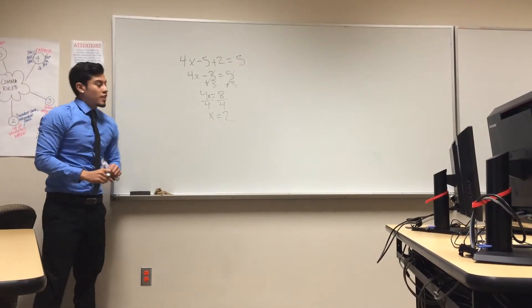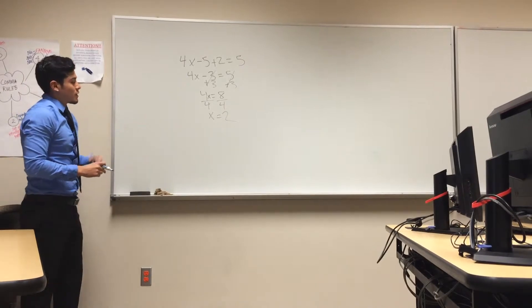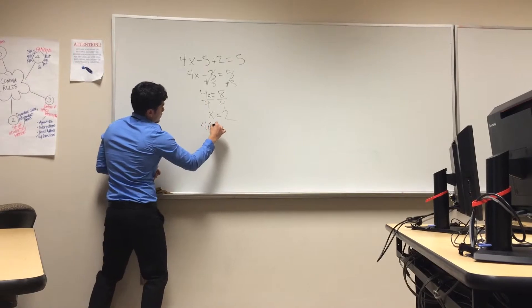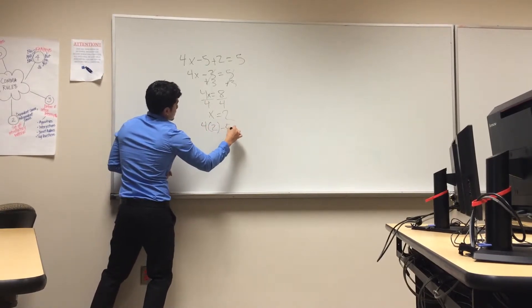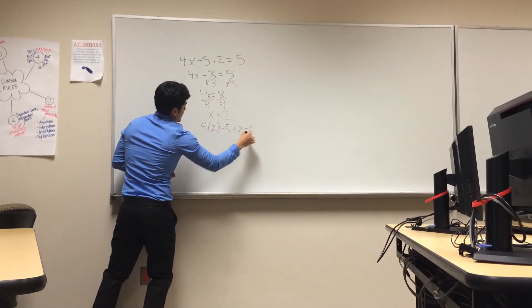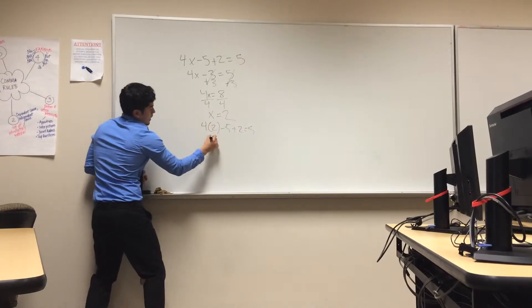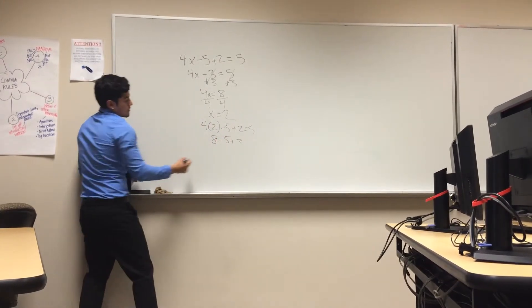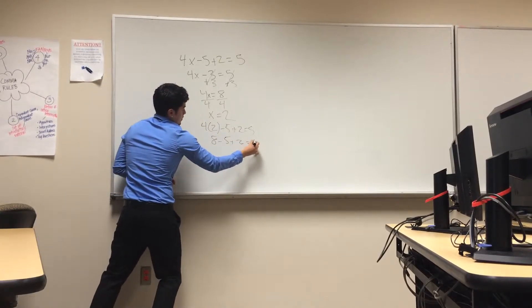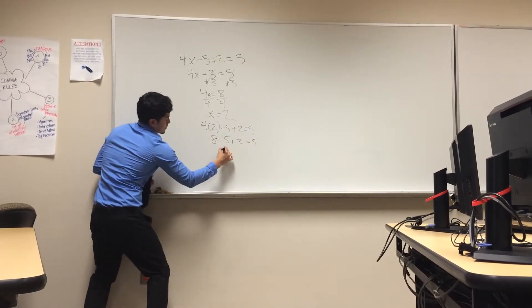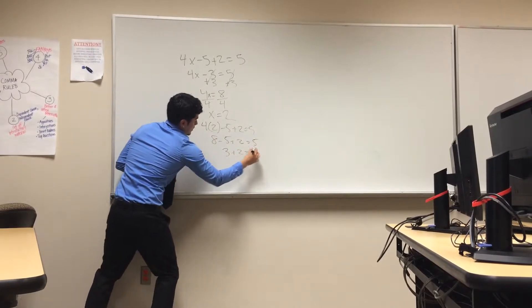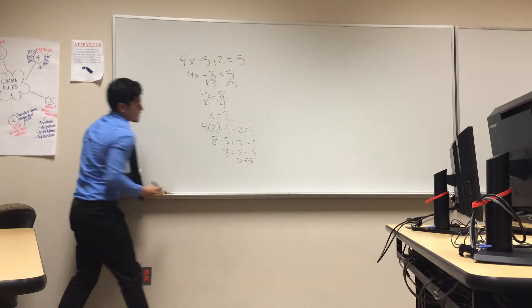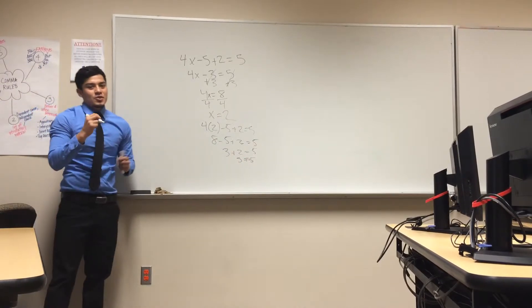If you want to make sure you got the correct answer, you can always plug in x. So, let's try that out. 4 times 2 is 8, minus 5 equals 3, plus 2 equals 5. So, that's how you know you got it right.